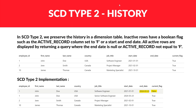SCD Type 2 is about maintaining history — preserving historical events. To maintain this history, we use a start date and end date in the table. For previous or inactive values, we indicate their status using a flag column called 'current flag.' Records with a true flag are active; a false flag indicates an inactive record, identified by the presence of an end date.